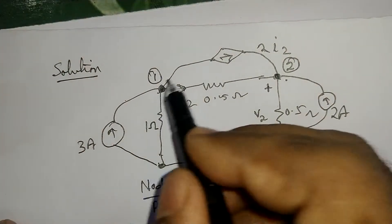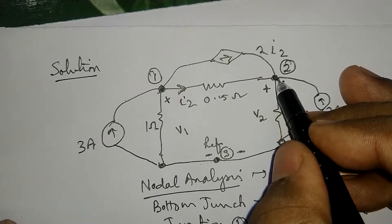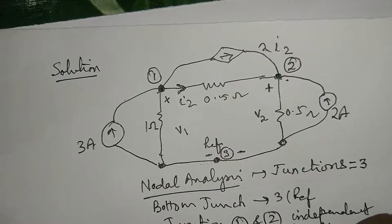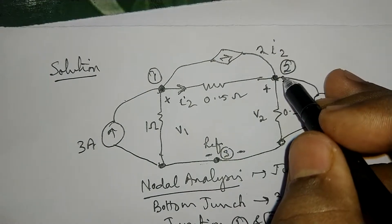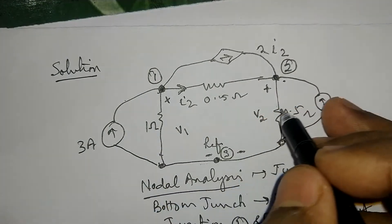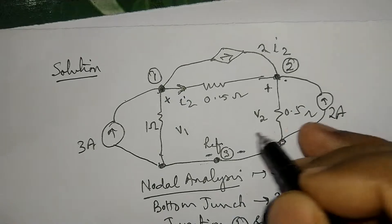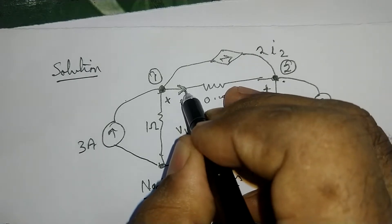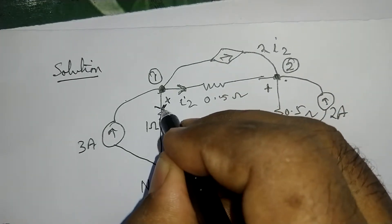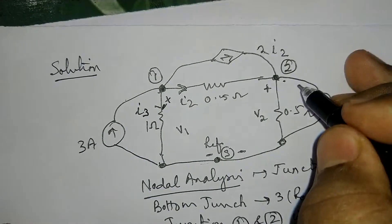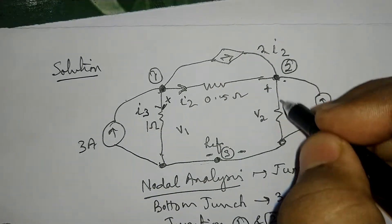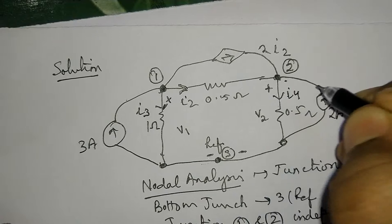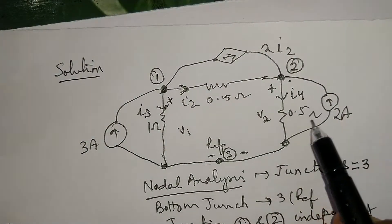To write the nodal equations at independent nodes 1 and 2, it is first required to represent the currents in various branches of the circuit. In this 0.5 ohm, I2 current is already given. I will consider current I3 in the downward direction in the 1 ohm, and I4 in the other 0.5 ohm. Therefore, in every branch I have represented the currents.